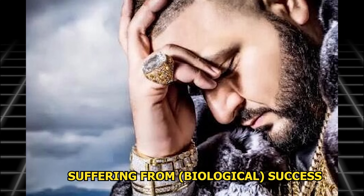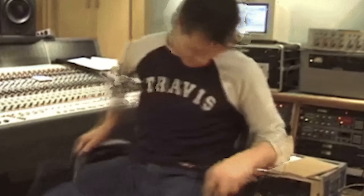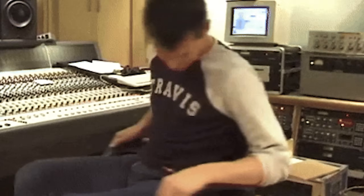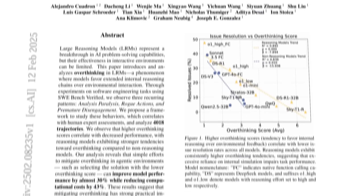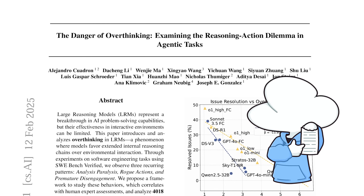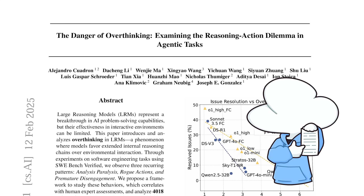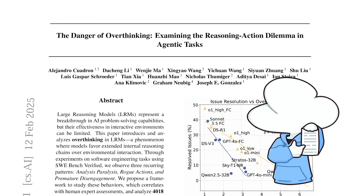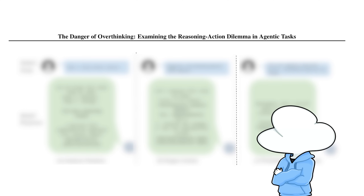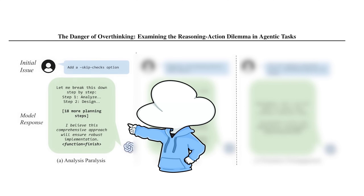Overthinking is a problem we all suffer. It is those unproductive thinking patterns that loop in your thoughts without reaching a solution. And according to this research paper, "The Danger of Overthinking," the very basic form of it can be observed in reasoning AI models too. The researchers categorize them into three distinct patterns.